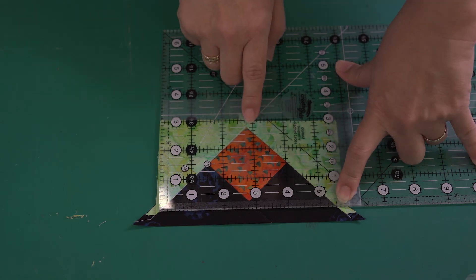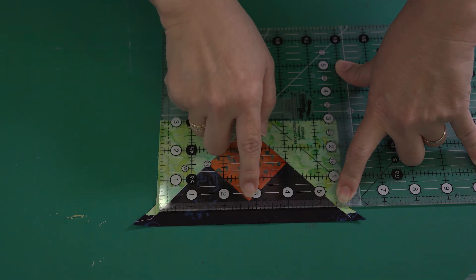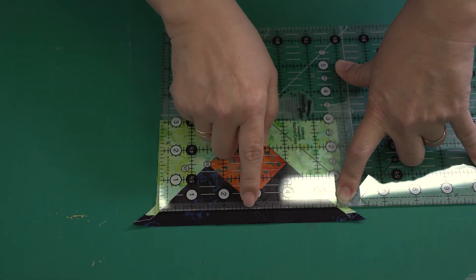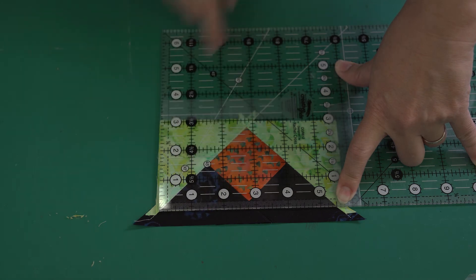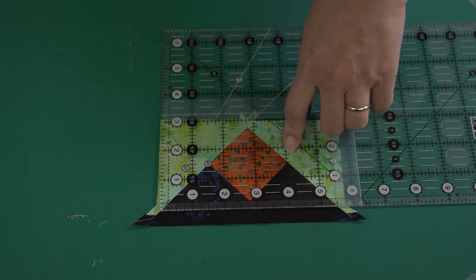When you look at your square here there should be a quarter inch seam from the edge of the ruler to the point and a quarter inch from here to your final trim.